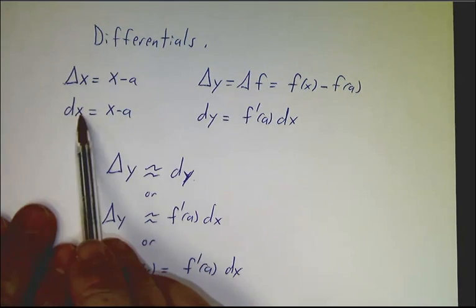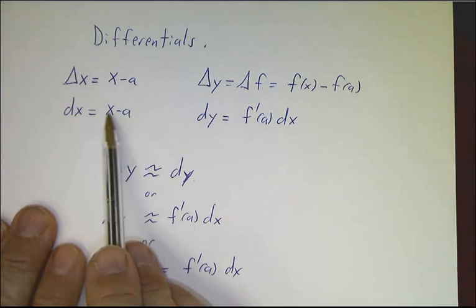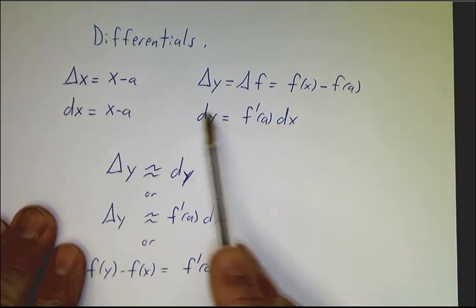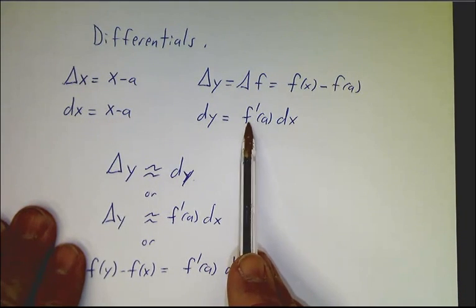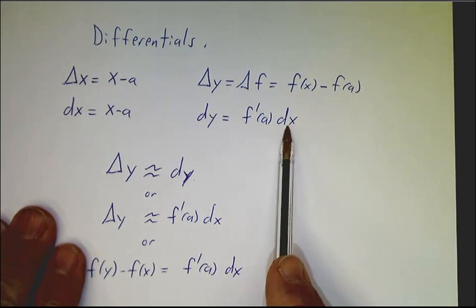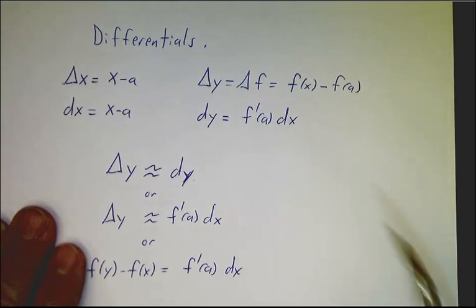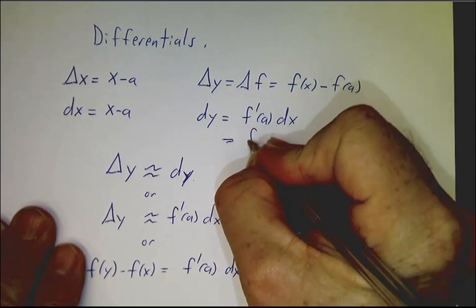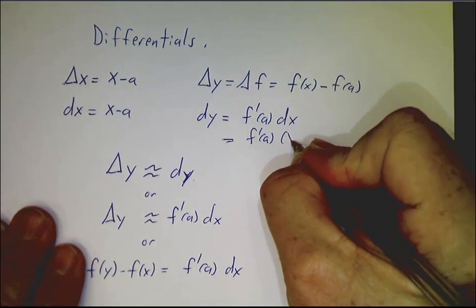We'll define this new function, dx, to be the same thing as delta x. And dy will be the derivative times delta x. So this is the same thing as f'(a) times x minus a.